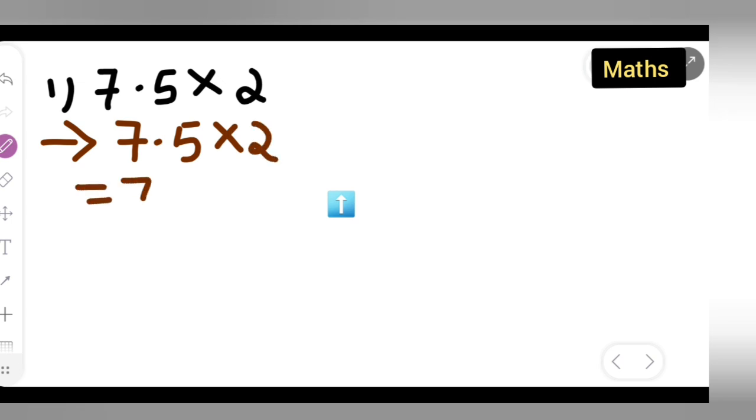Then you all can write down 75 upon 10, and then write multiplied by 2. So this will be equal to what? 75 multiplied by 2 upon 10.